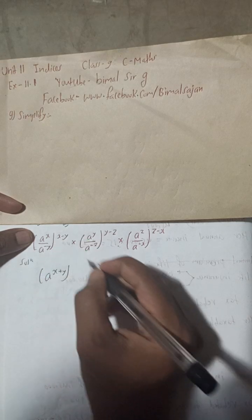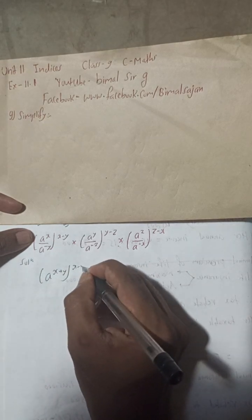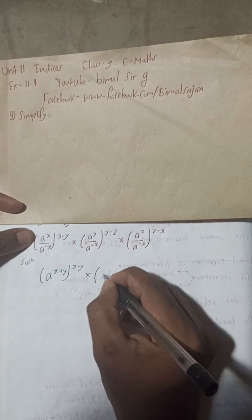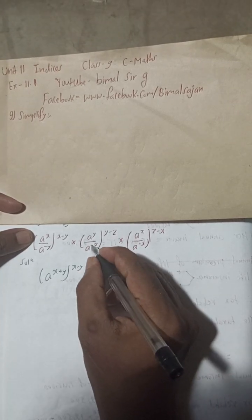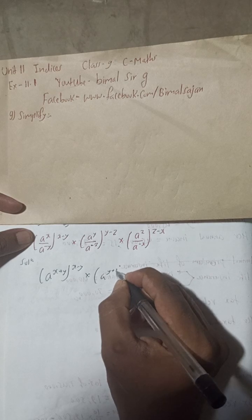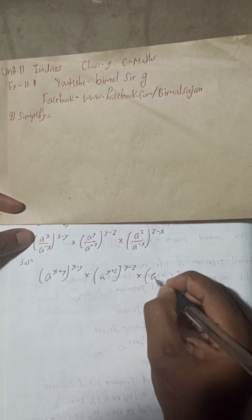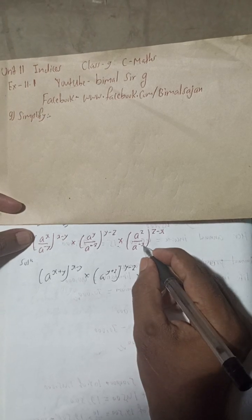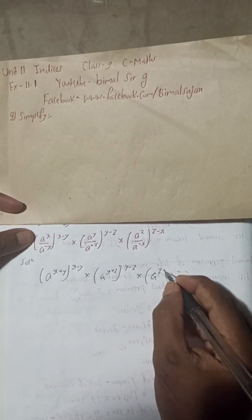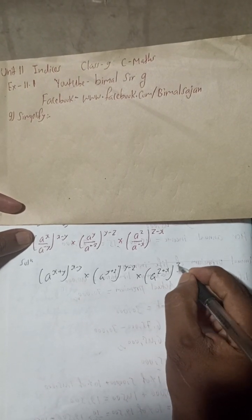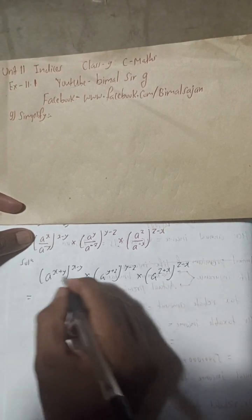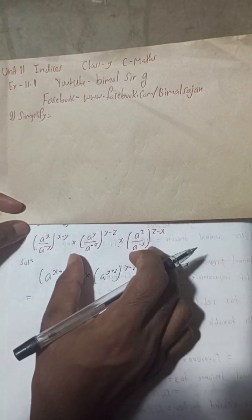And plus y will be minus y, and this is as it is x minus y. Again here, a to the power y, and when this minus z goes up, this will be plus z, and to the power y minus z. Into a to the power z, and this minus x when it goes up, this will be here plus x, and z power minus x.